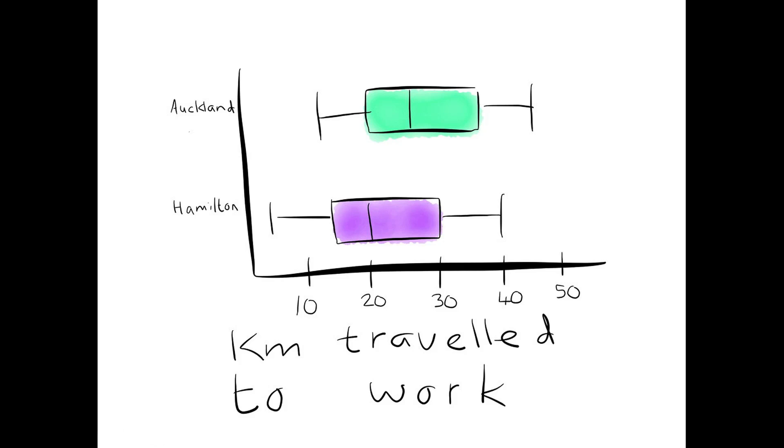I can also talk about the interquartile range. The interquartile range is the space in the box. So, I can say that 50% of Aucklanders travel further than the median of Hamiltonians, which only travel 20km, whereas 50% of Aucklanders travel more than 20km.